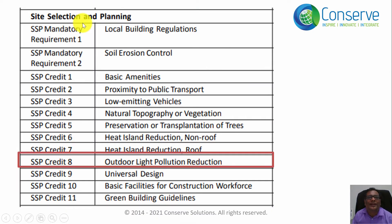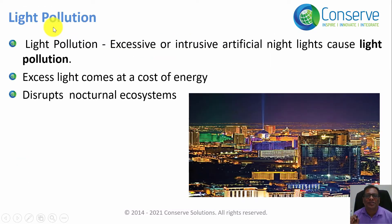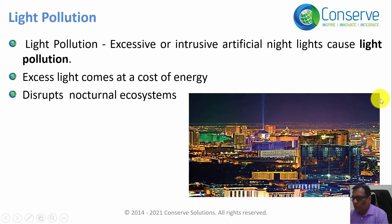The next credit in site selection planning is about light pollution. In this recording we will discuss credit 'Outdoor Light Pollution Reduction.' Light pollution is not much discussed compared to water pollution, air pollution, soil pollution, ozone depletion, or global warming. So first let us understand what light pollution is and why it is important.